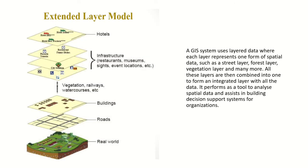Here we see the extended layer model. GIS uses layered data where each layer represents one form of spatial data, such as street layer, forest layer, building layer, vegetation layer, etc. The real world is classified into different layers, and all these layers are combined into one integrated layer. This integrated layer acts as a tool to analyze spatial data and assists in building decision support systems for organizations.